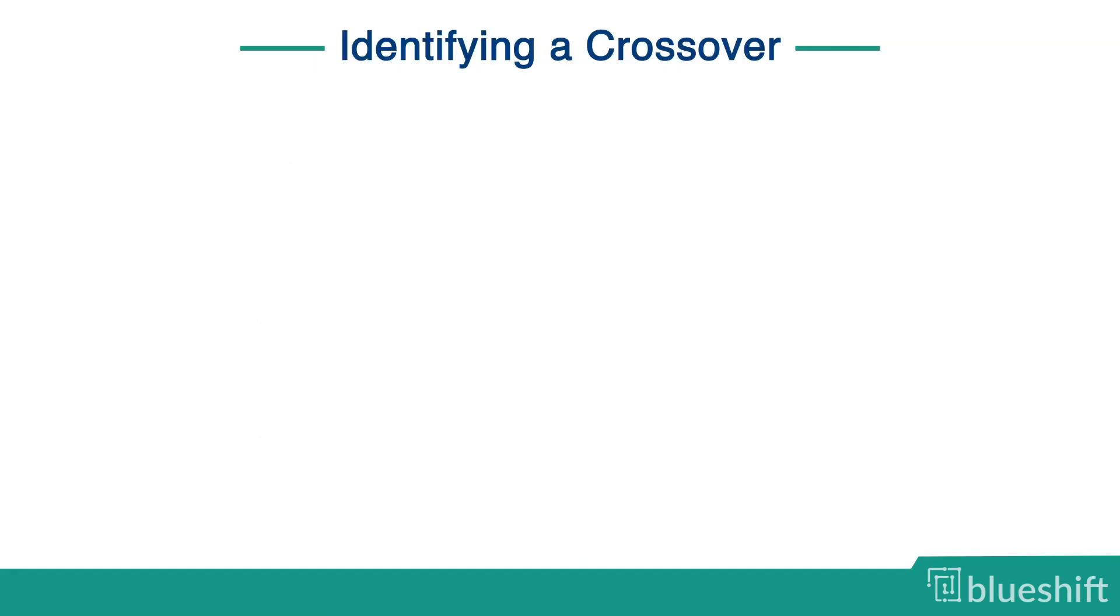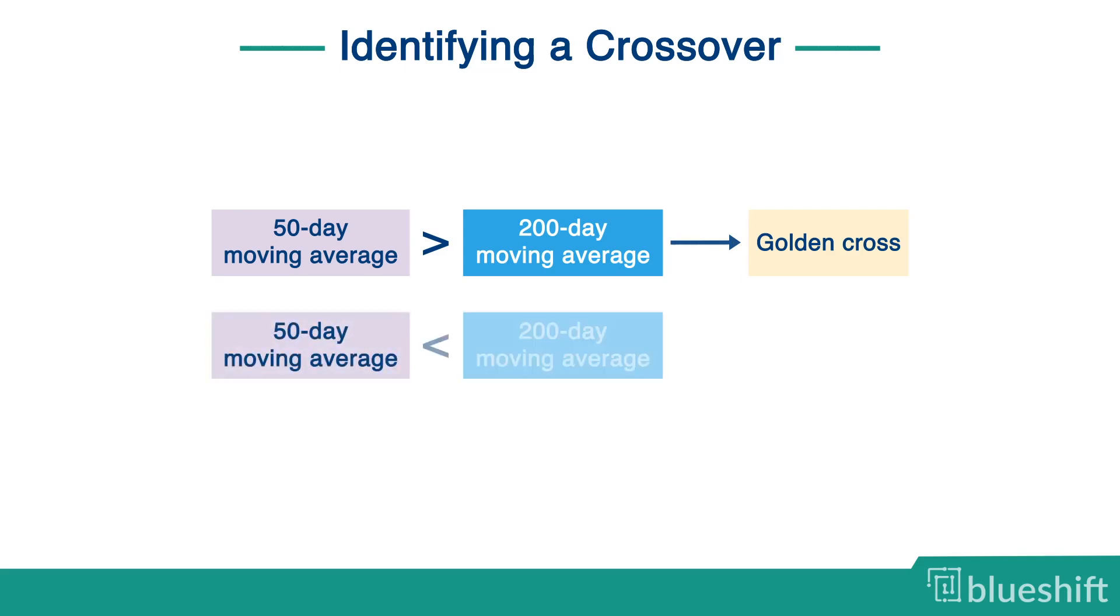After you have defined the asset on which you want to trade, the next step is to identify the moving average crossover. How to identify the crossover? You can compare 50-day and 200-day moving averages. When the 50-day moving average is greater than the 200-day moving average, it is called a positive crossover or golden cross. When the 50-day moving average is less than the 200-day moving average, it is called a negative crossover or death cross.